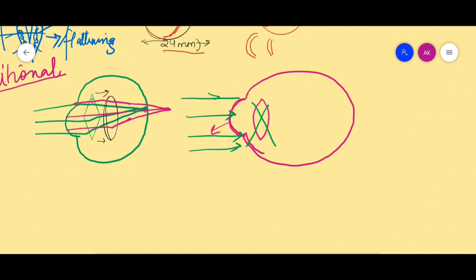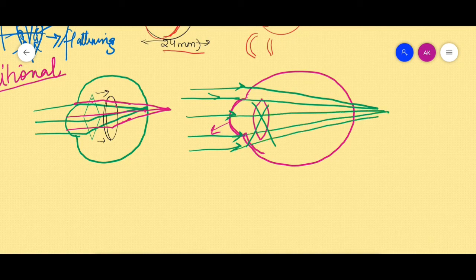Only the cornea is the main refractive component in that eye, so therefore definitely it will not be able to focus those rays of light onto the retina. These rays of light are going to go and focus somewhere behind the retina, and therefore absence of crystalline lens also